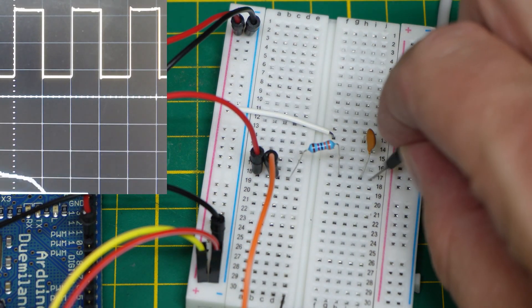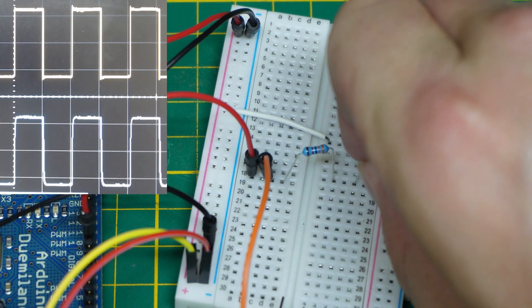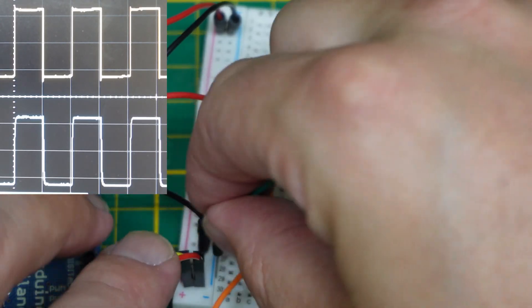This jumper wire goes to probe number 2 on the oscilloscope. It really does not want to go into the board. That probe also needs a ground.